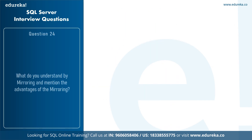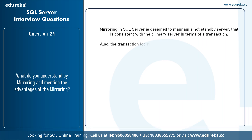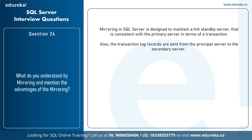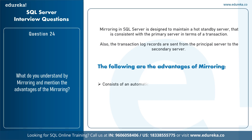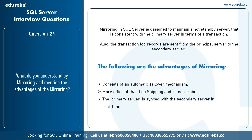The next question is: what do you understand by mirroring and what are a few advantages? Mirroring in SQL Server is designed to maintain a hot standby server that is consistent with the primary server in terms of transactions. Transaction log records are sent from the principal server to the secondary server. Advantages of mirroring include: automatic failover mechanism, more efficient and robust than log shipping, and the primary server is synced with the secondary server in real time.